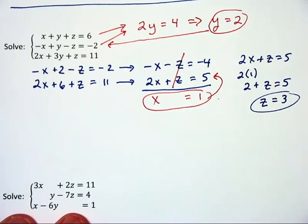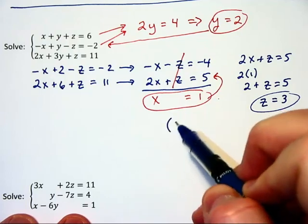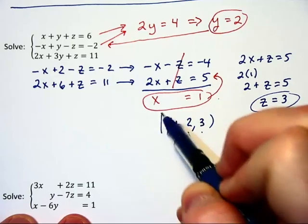So our solution to this system, written as a triple, is 1, 2, 3. That's in x, y, z order.